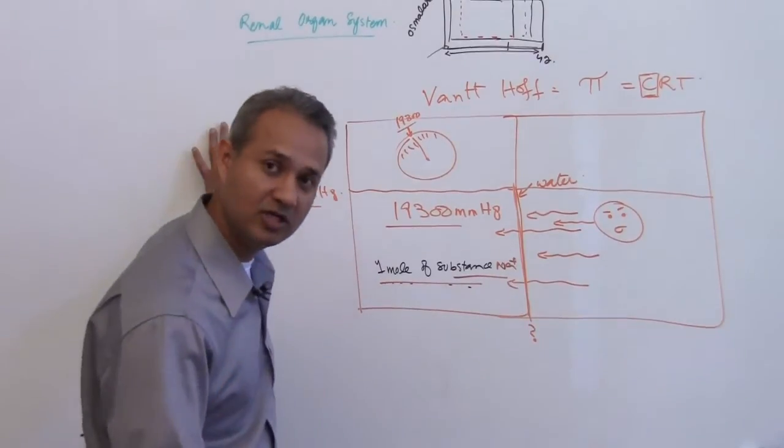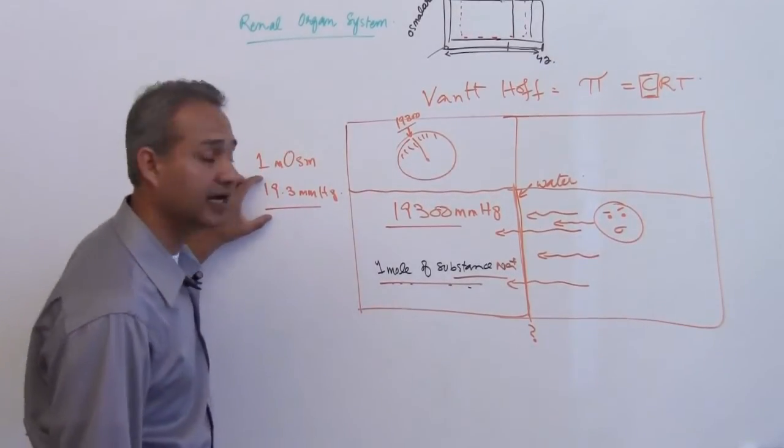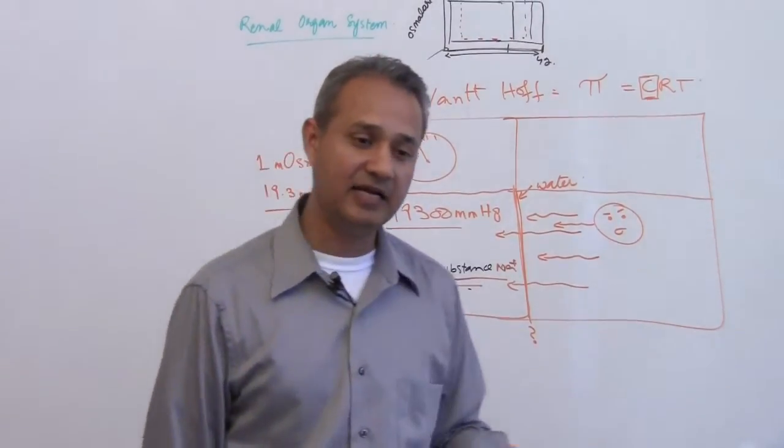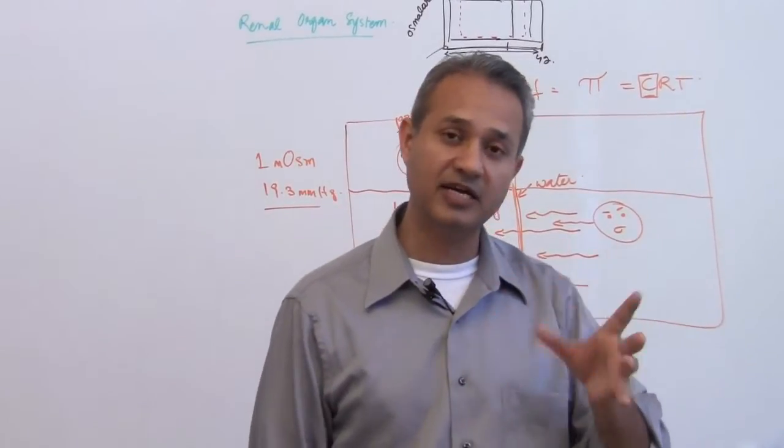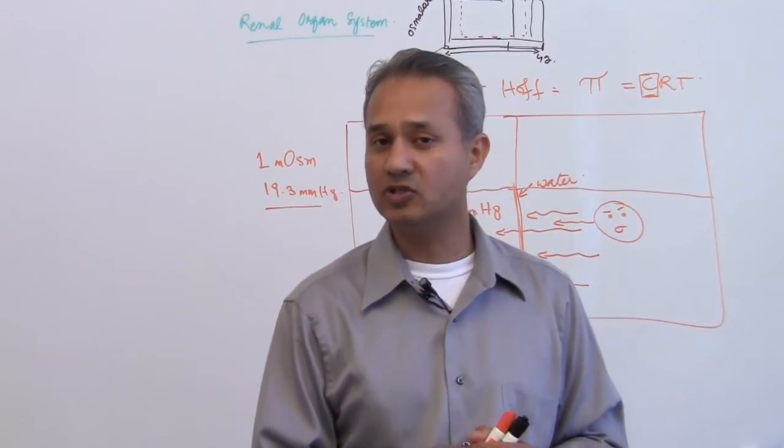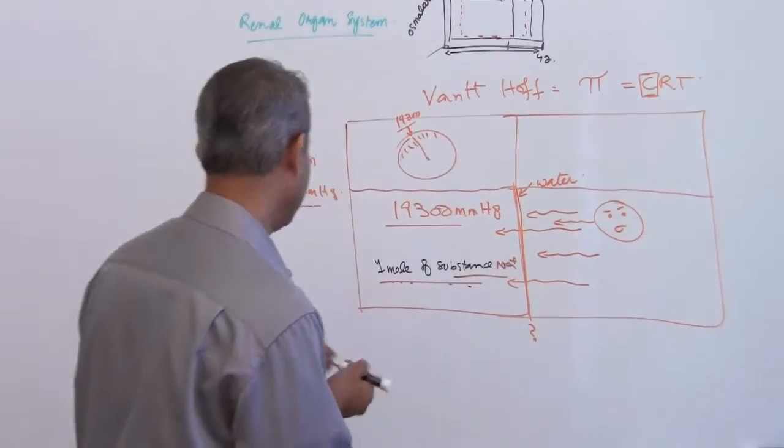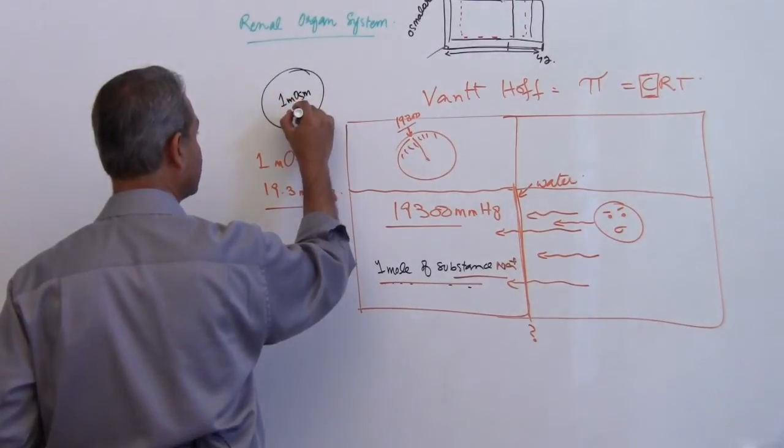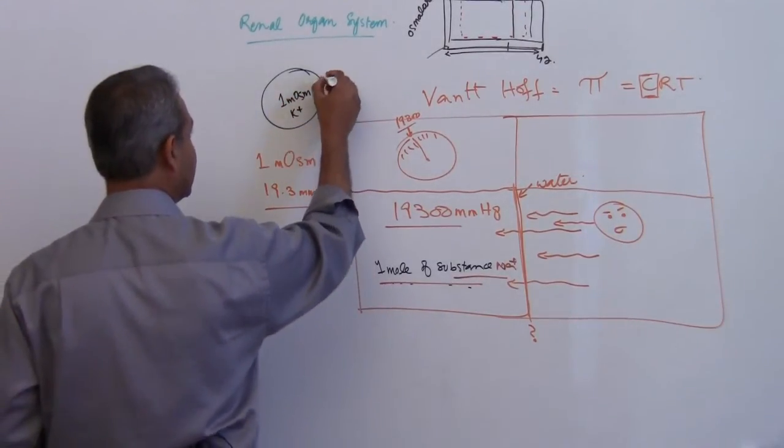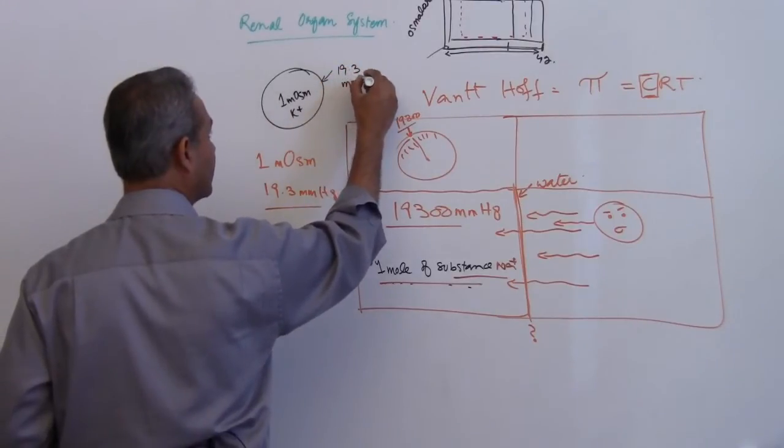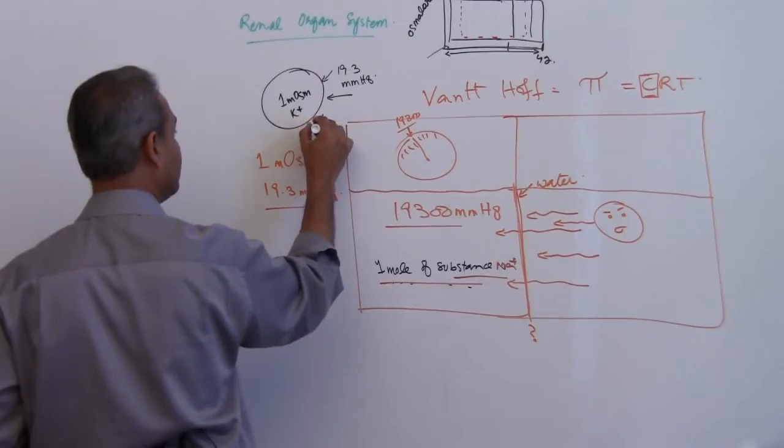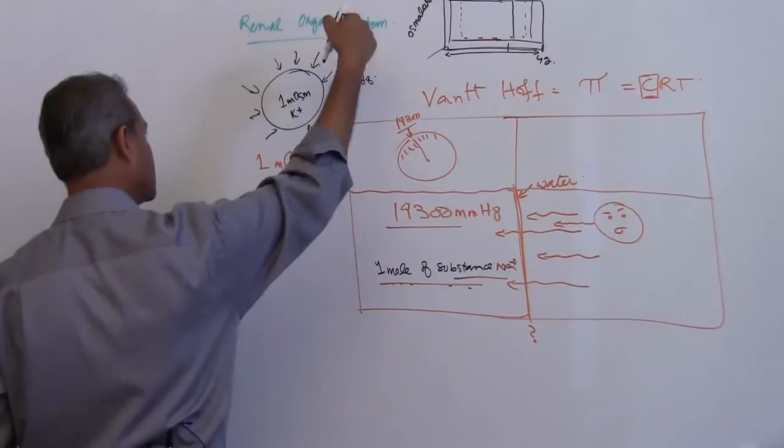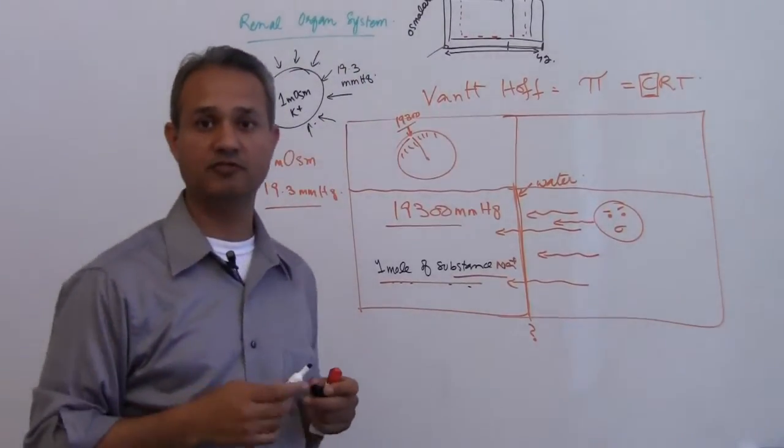One milliosmole is one thousandth of a mole, which is about 19.3 millimeter of mercury. If I said that inside a cell there is one milliosmole of potassium, that would mean there is 19.3 millimeter of mercury pressure experienced on the cell wall by water. The water is trying to exert this much pressure to go in the cell because of the presence of this one milliosmole.